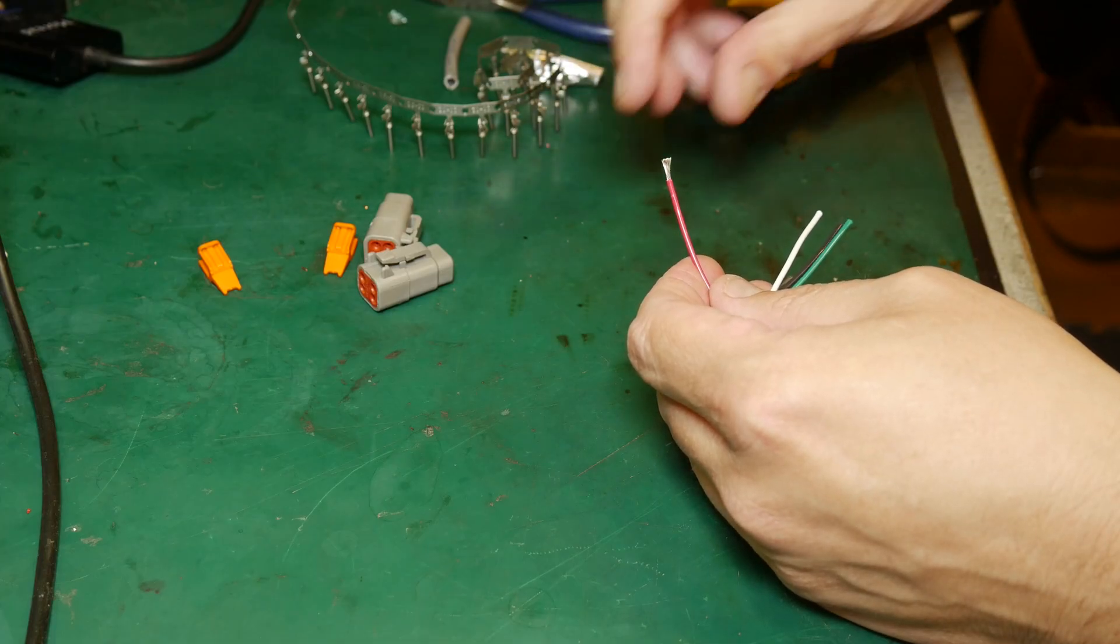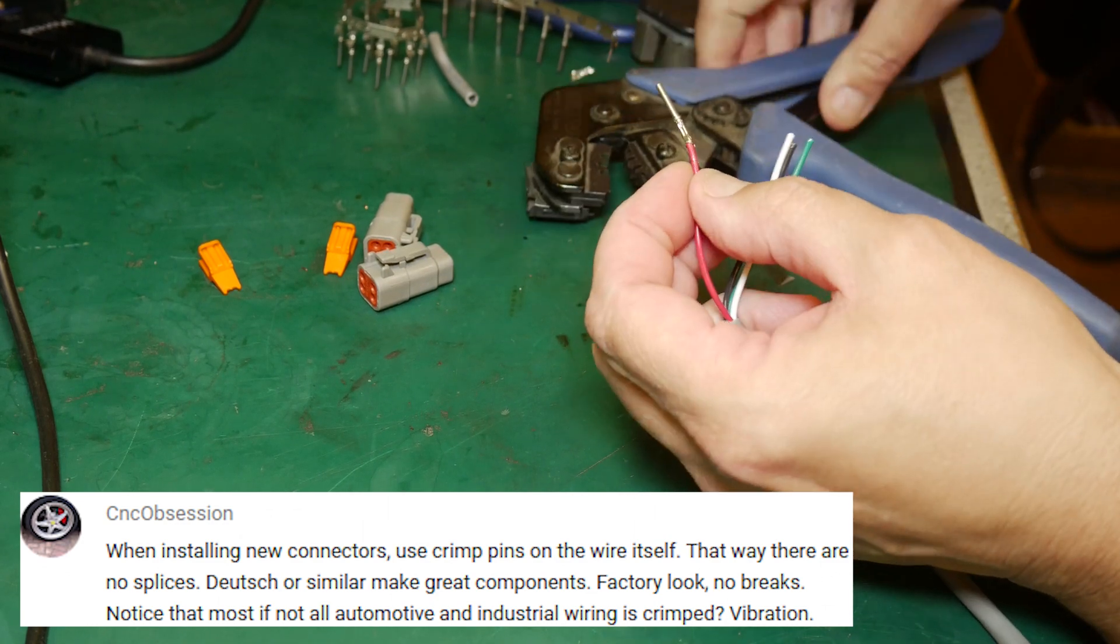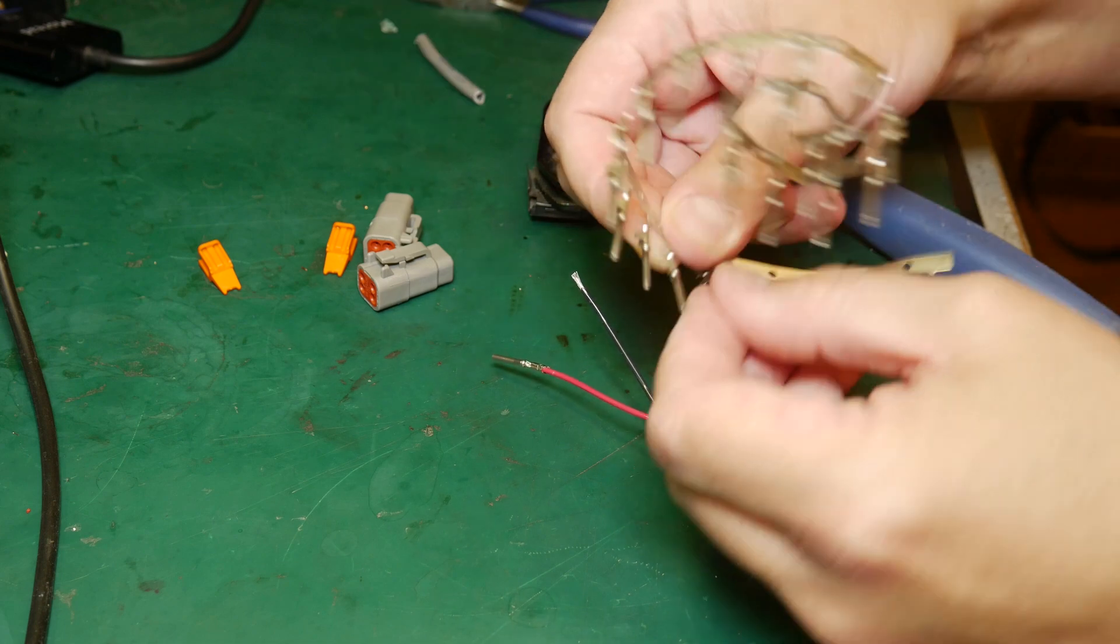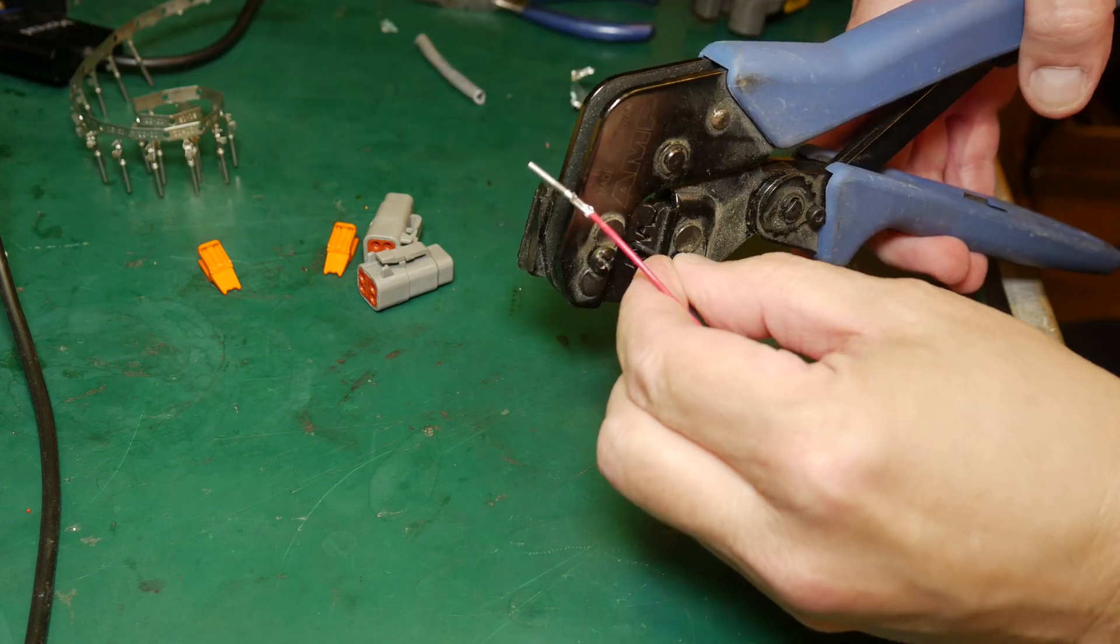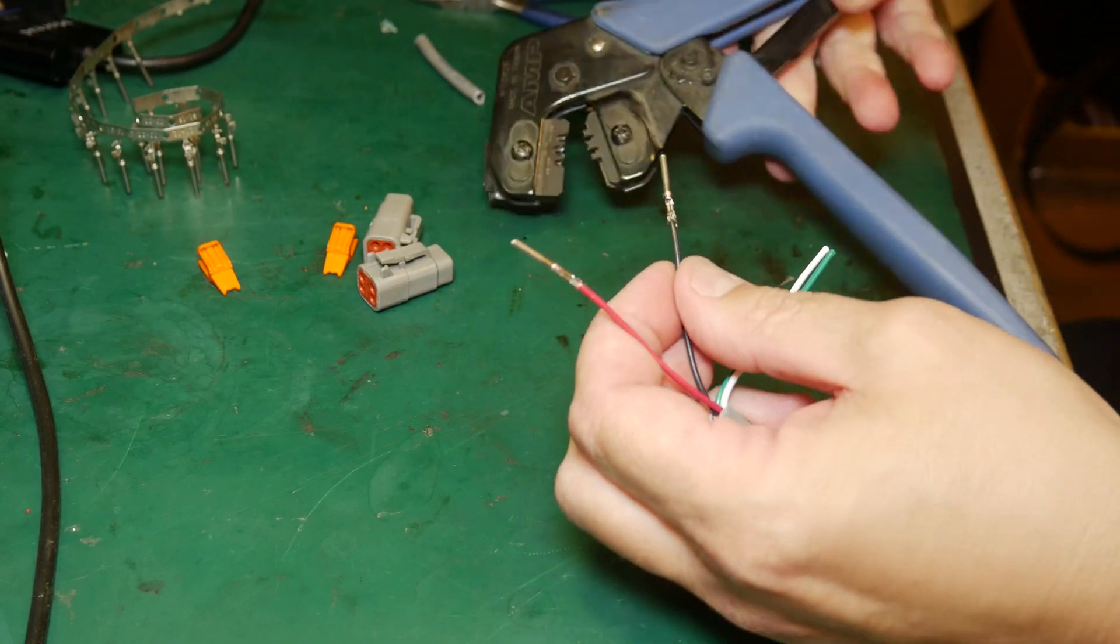So on to my failure for this week. The stepper motor connectors that I installed last week, they are not going to work. First off in the comments, a viewer, CNC Obsession pointed out that I should have crimped those rather than soldering them, and that's right. I mean, I know that I should have done that, and I don't know why I didn't do that. I have the tool to do that, so I really have no excuse.